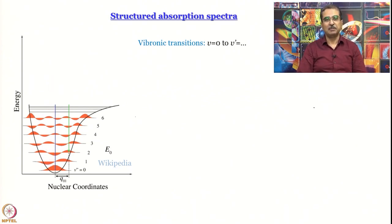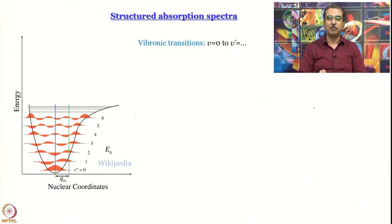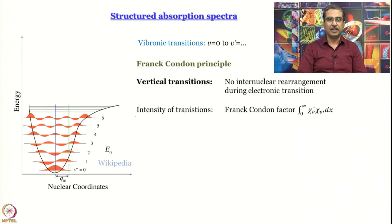Structured absorption spectra like the one you have seen arise out of vibronic transitions — v equal to 0 to v-dash equal to 0, 1, 2, 3, and so on. This is governed by something called the Franck-Condon principle.